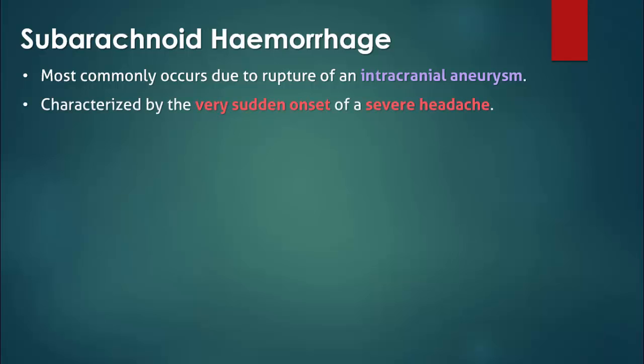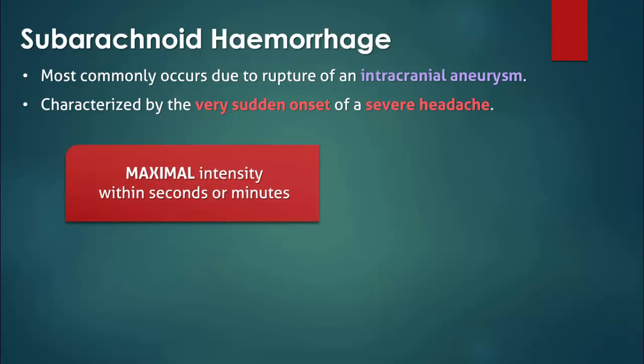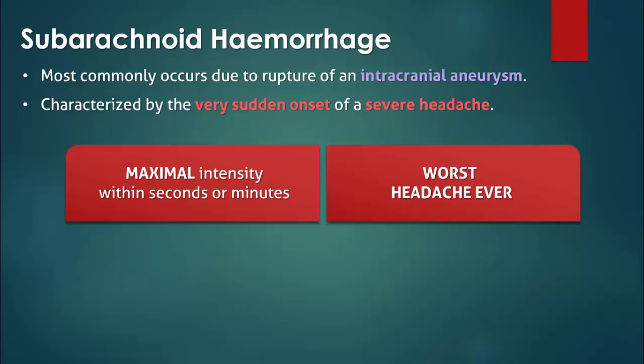Subarachnoid hemorrhages are characterized by the very sudden onset of a severe headache. The rapid onset has been described as a thunderclap because the headache reaches maximal intensity within seconds or minutes. It's also worth noting that in a large proportion of cases, the headache begins during physical exertion. The severity is another major clue, as even patients with a history of migraines will often describe this episode as the worst headache of their life.